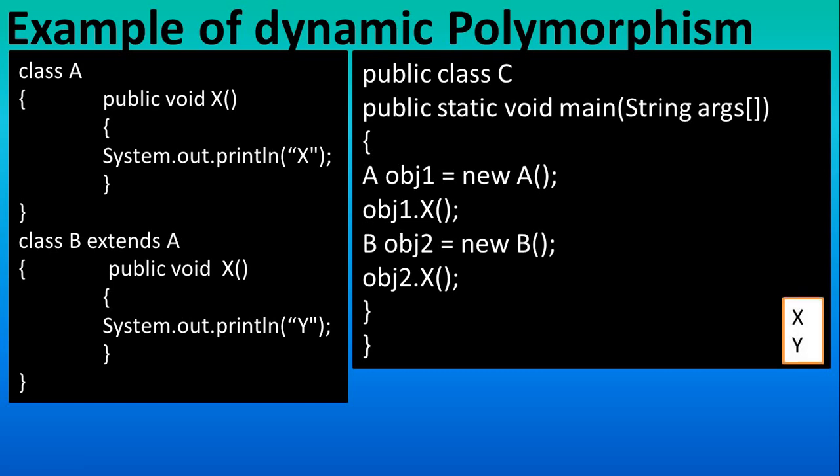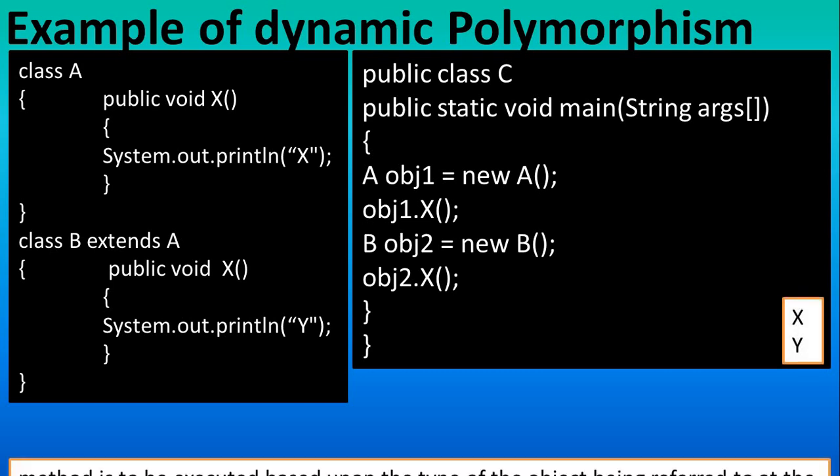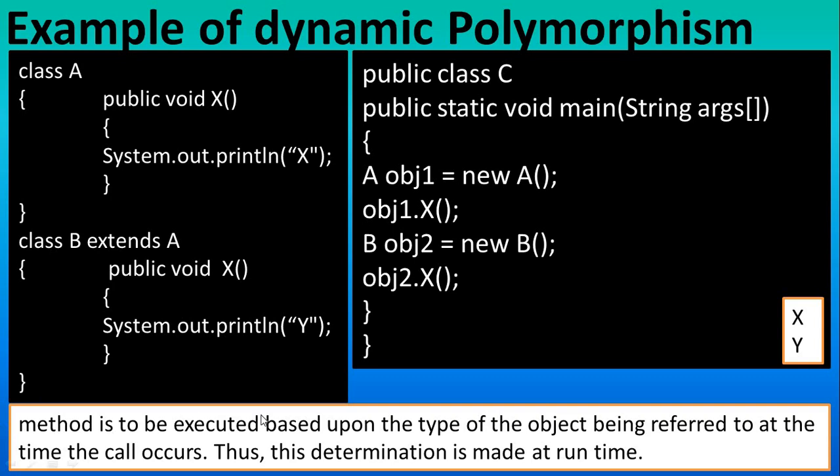You get the output X and Y. The important point is method is to be executed based on type of object being referred at the time the call occurs, that's why it is determined at the runtime, so it is runtime polymorphism.